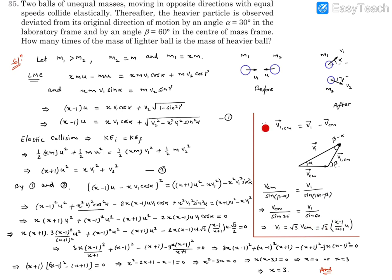The center of mass velocity is vcm = (m1*u − m2*u)/(m1 + m2) = (x − 1)u/(x + 1). Therefore v1 = √3 * (x − 1)u/(x + 1). Now this expression for v1 is substituted back into the combined equation from energy and momentum conservation. Substituting v1² = 3*(x − 1)²*u²/(x + 1)², and noting that u² cancels throughout, we get an equation purely in x.